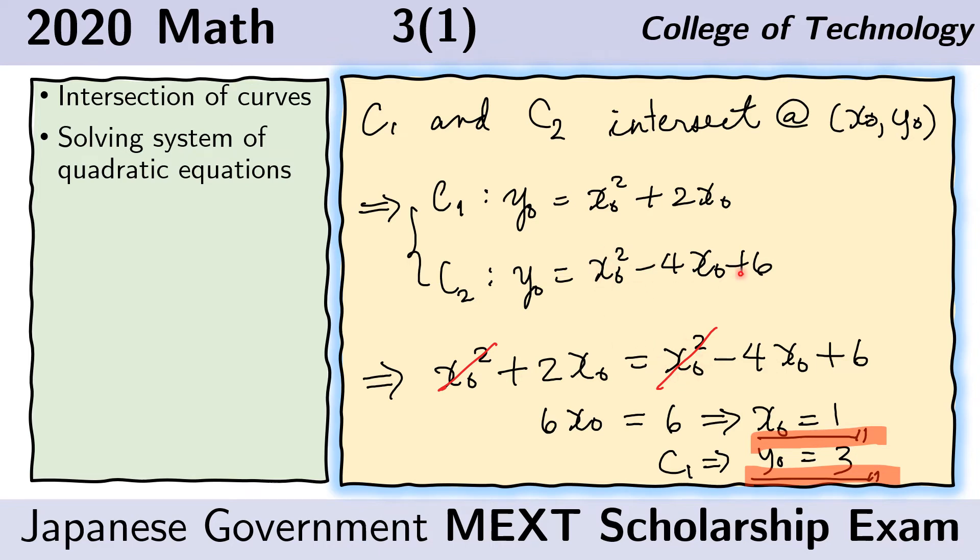On the right side we take this expression and put it here and we just solve it. This cancels with this. We are left with this which is a simple linear equation and we see that in fact that gives us X sub O equals 1.